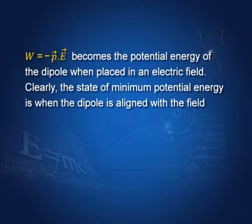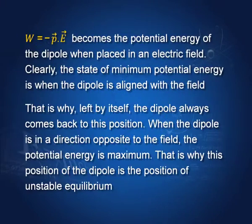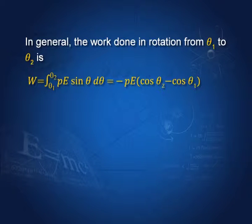Clearly, the state of minimum potential energy is when the dipole is aligned with the field — that is the position of stable equilibrium. When the dipole is anti-parallel to the field, the potential energy is maximum. In general, the work done in rotation from θ₁ to θ₂ is the integral of pE sinθ dθ from θ₁ to θ₂, which equals -pE(cosθ₂ - cosθ₁).